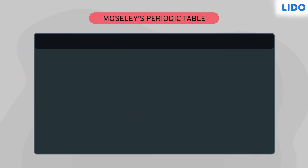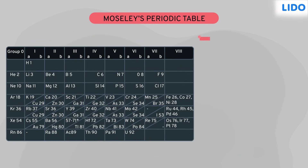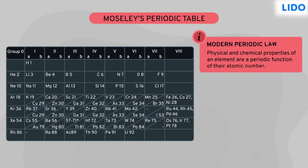He thus modified the periodic table, arranging the elements in the order of their atomic number instead of atomic mass. His discovery gave rise to the modern periodic law, which states that the physical and chemical properties of an element are a periodic function of their atomic number.